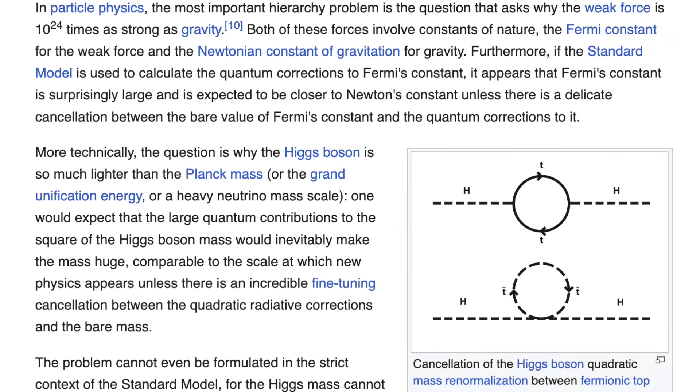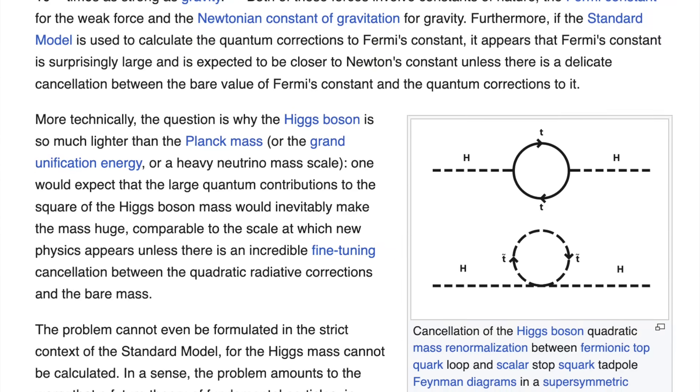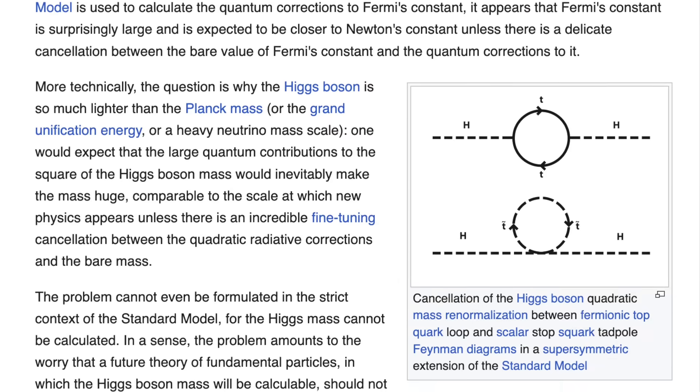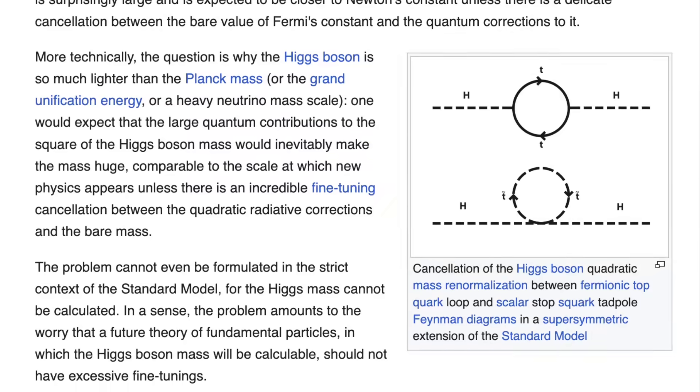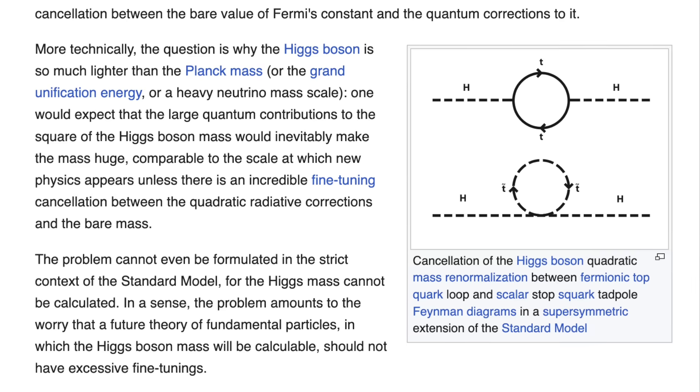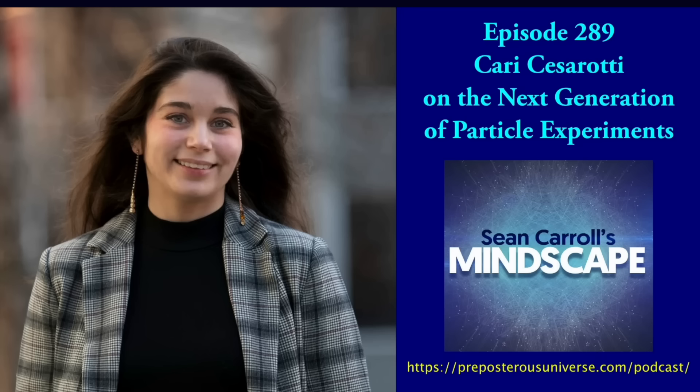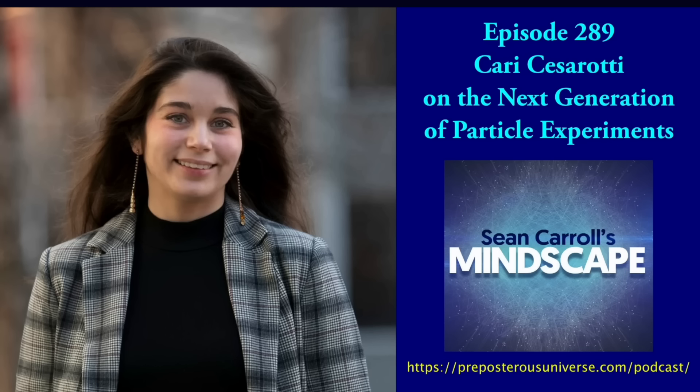So the hierarchy problem is something specific to understanding the mass of the Higgs boson, which is one of the bosons in the standard model. And the Higgs is the weirdest particle in the standard model by far. It is the only particle that has the properties that it has. So like I said earlier, a lot of particles sit in three generations. The Higgs boson does not. The Higgs boson stands as a very weird outsider that you may have heard is responsible for giving particles mass.